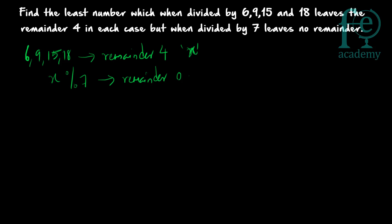So we have to find the least possible number such that when divided by 6, 9, 15, and 18 we get remainder 4, and when divided by 7 there is no remainder — the number is a multiple of 7. To do this, first find a number divisible by 6, 9, 15, and 18 by computing their LCM.